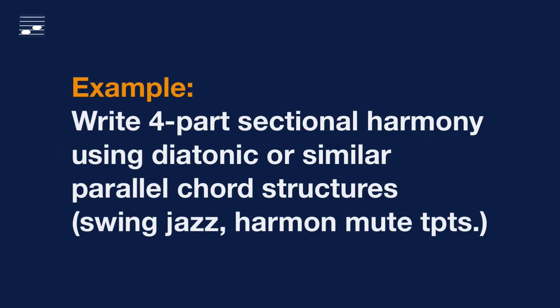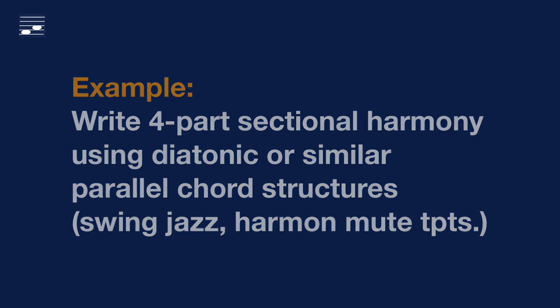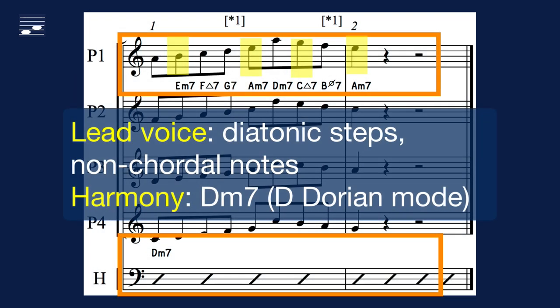Our example for harmonization with similar parallel chord structures is a short phrase for four-part trumpet section playing with harmon mutes. The lead part consists of mainly diatonic stepwise motion over a static D minor 7 chord. This phrase in D-Dorian mode contains various non-chordal notes.